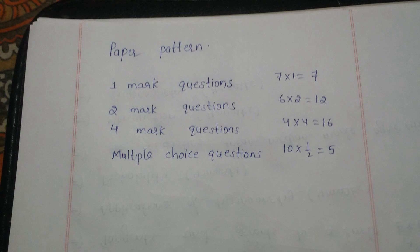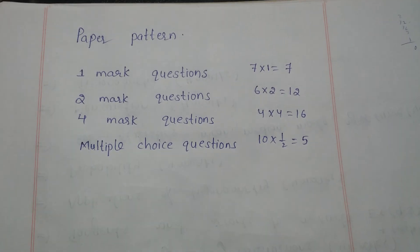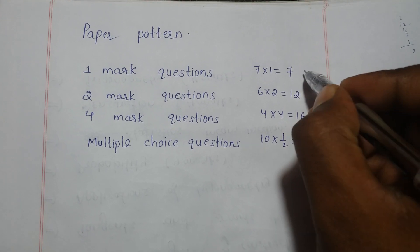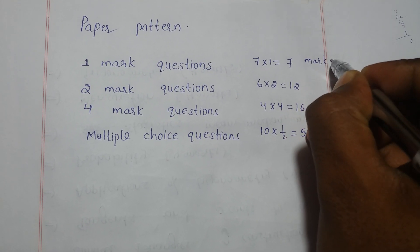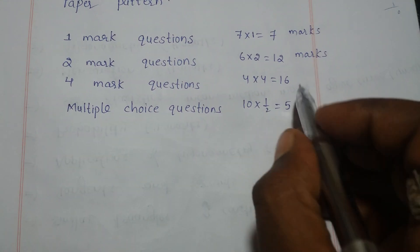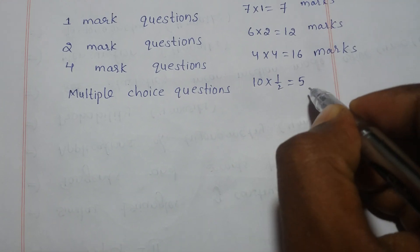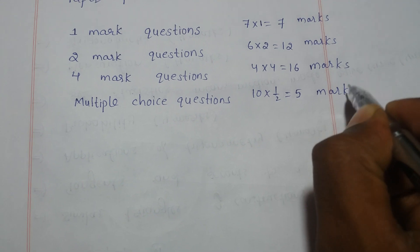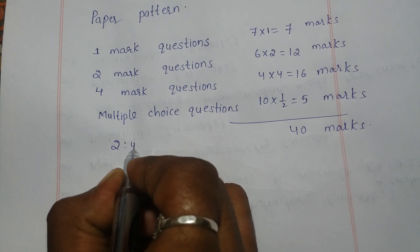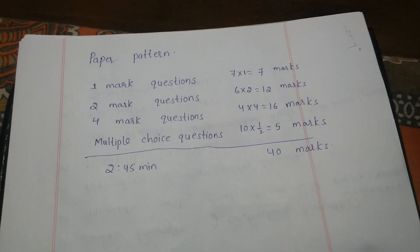So the paper pattern is: seven one-mark questions — seven marks. Six two-mark questions — twelve marks. Four four-mark questions — sixteen marks. Ten multiple choice questions at half mark each — five marks. Total is a 40-mark paper and 45 minutes time will be given, with 15 minutes for reading the question paper.